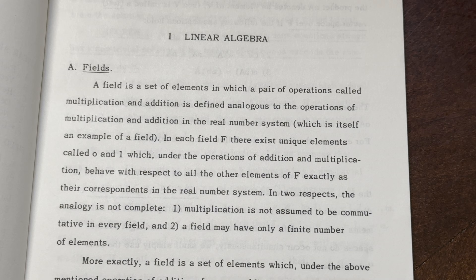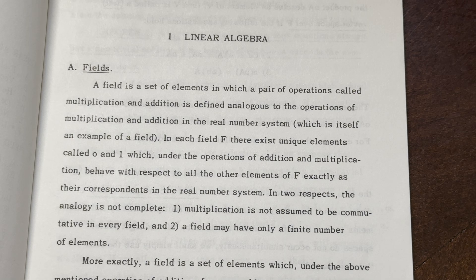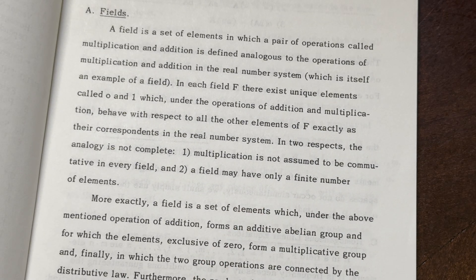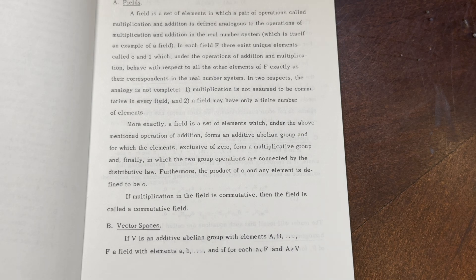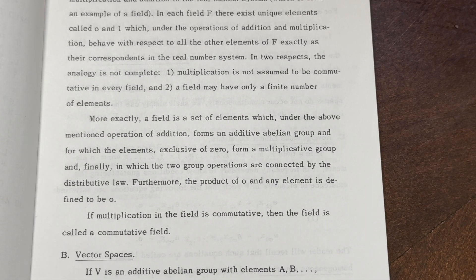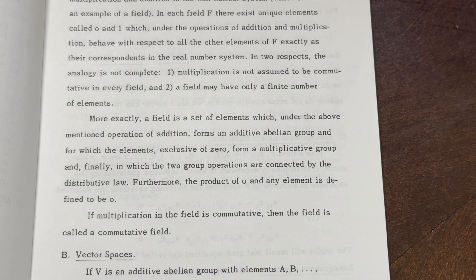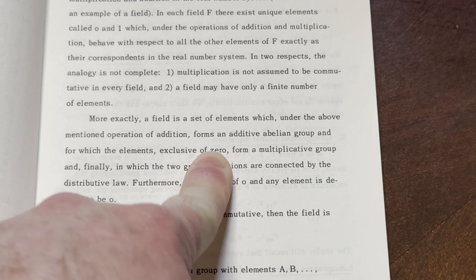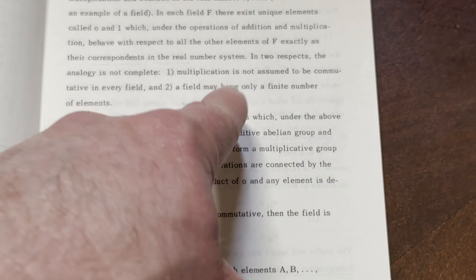So basically we're trying to mimic the real numbers, trying to generalize the real number system. In two respects the analogy is not complete. One, multiplication is not assumed to be commutative in every field — 2 times 3 equals 3 times 2, both result in 6. And two, a field may have only a finite number of elements. There are finite fields, and the study of finite fields is very important and interesting. A field is a set of elements which, under addition, forms an additive abelian group, and for which the elements exclusive of 0 form a multiplicative group — so every non-zero element has an inverse element.